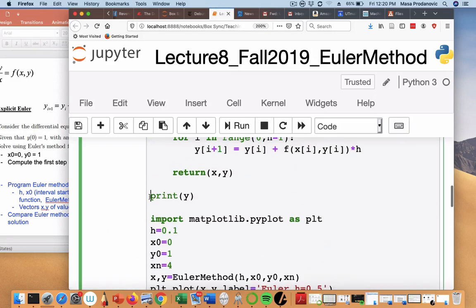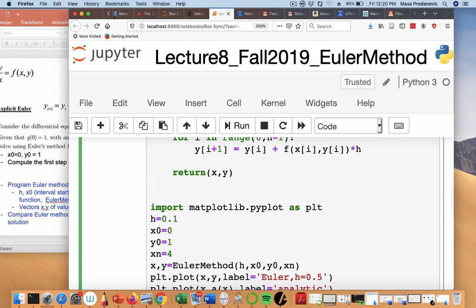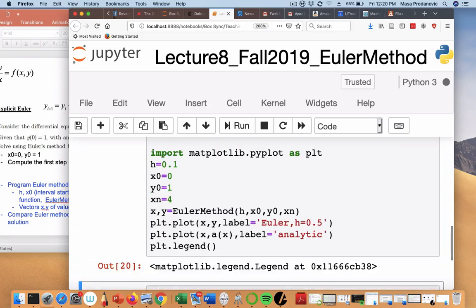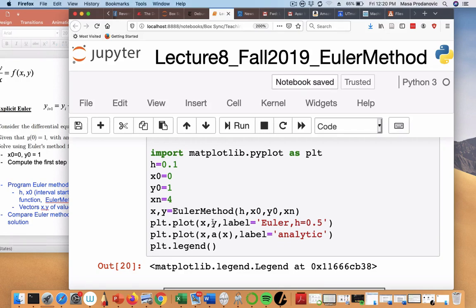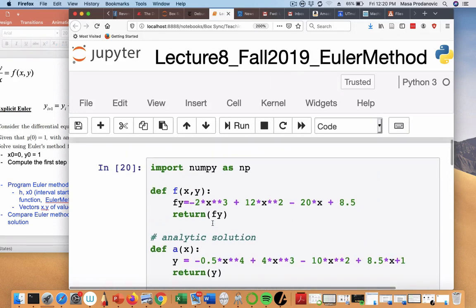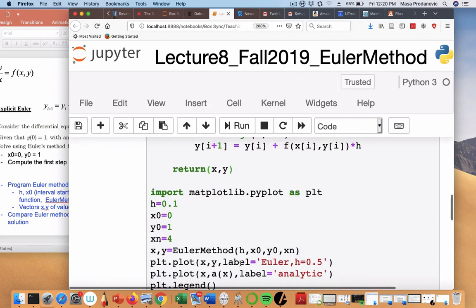And I'm going to also remove printing of y. So basically, I took a working code and I converted it to a function. That function depends on h, x0, y0, xn.